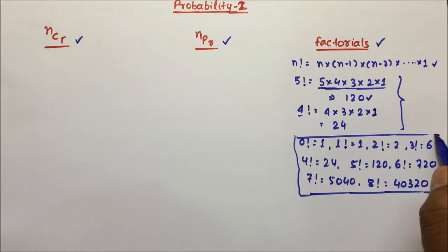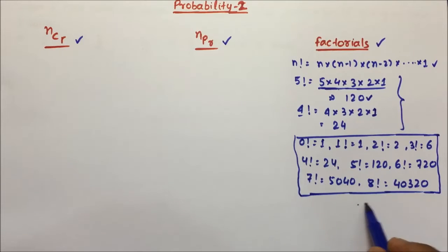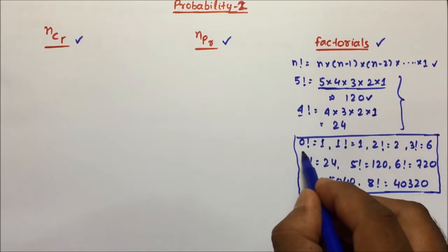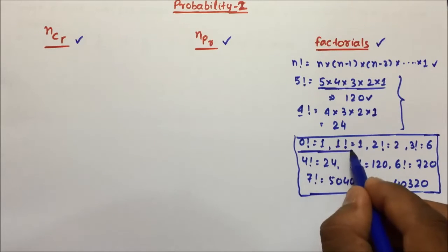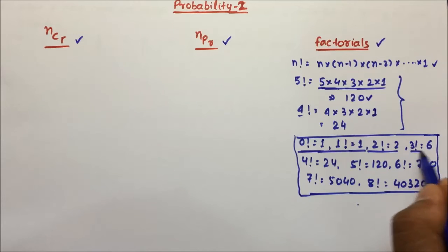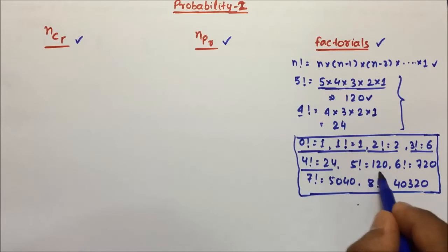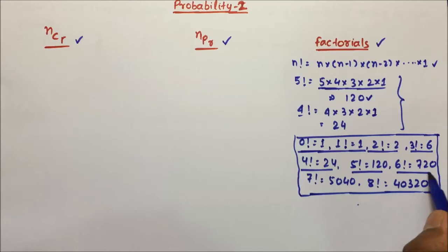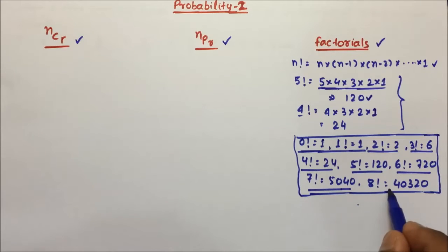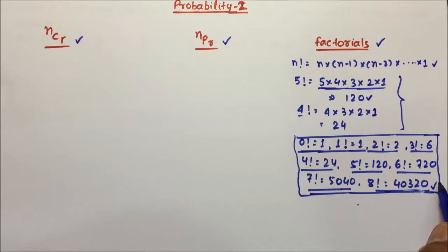I am not asking you to remember more than 8 factorial. You can easily remember: 0 factorial is 1, 1 factorial is 1, 2 factorial is 2, 3 factorial is 6, 4 factorial is 24, 5 factorial is 120, 6 factorial is 720, 7 factorial is 5040, and 8 factorial is 40320.